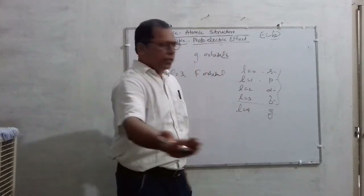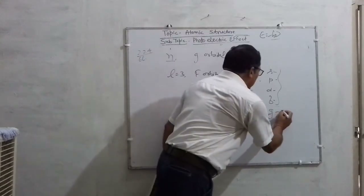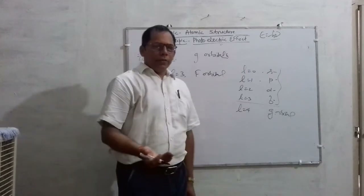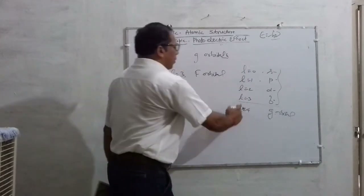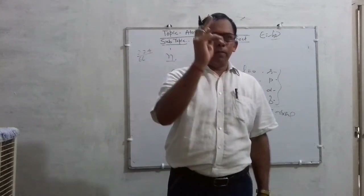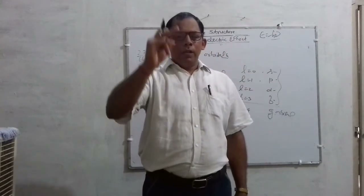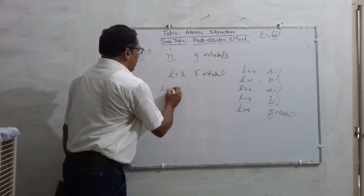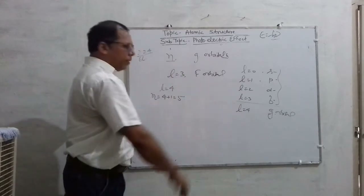For L equal to 3, F orbital is existing. For L equal to 4, G orbital will exist. The question asks what will be the value of N. You are knowing that the value of N must be 1 unit greater than L — if L is 4, then N will be 4 plus 1, which is 5.